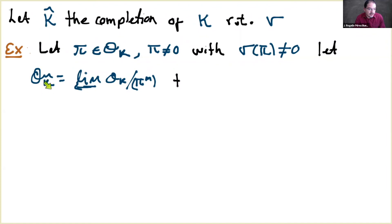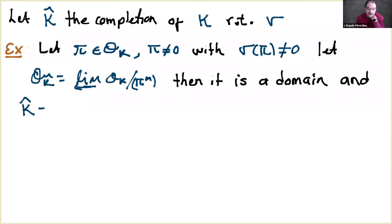A p-adic field is a local field of characteristic zero. You see that the p-adic rational numbers ℚ_p are p-adic fields: they are local fields of characteristic zero with residue field of characteristic p. One characteristic of ℚ_p is that the residue field is a finite field. In this more general definition, we allow p-adic fields with infinite residue fields.